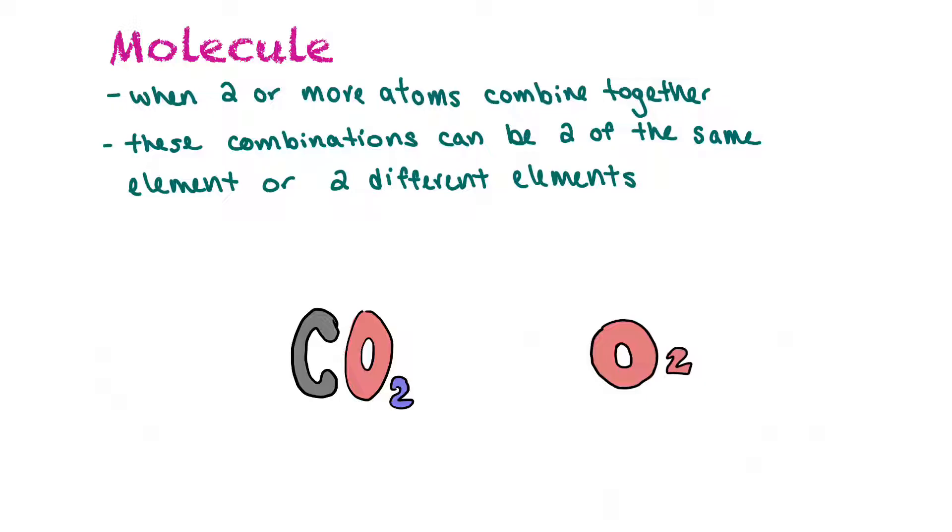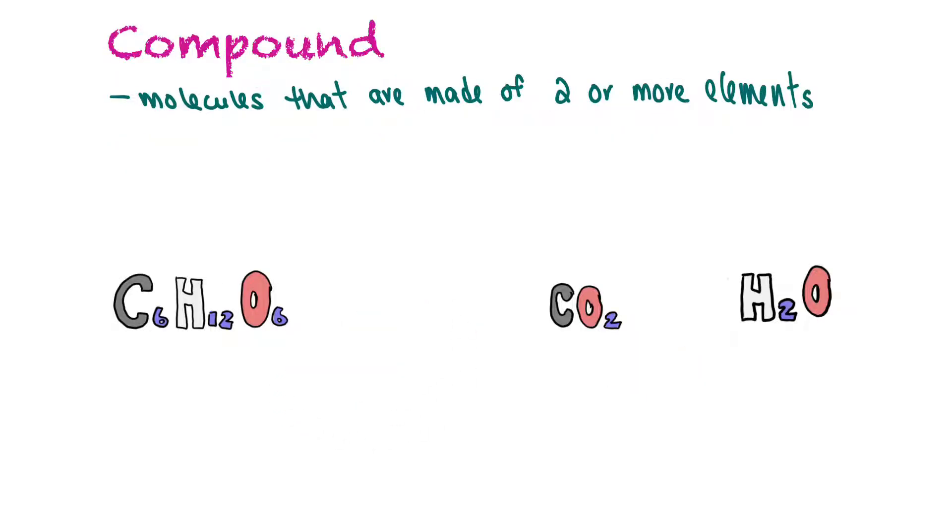A compound is when you have molecules that are made of two or more elements. If we look at this formula here, C6H12O6, also known as glucose, that would be a compound. CO2 and H2O are all examples of compounds because there's more than one element combined together.